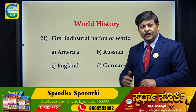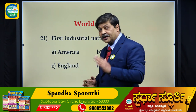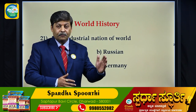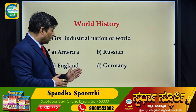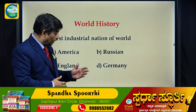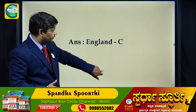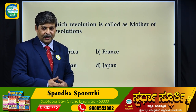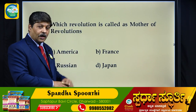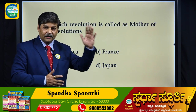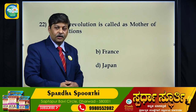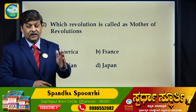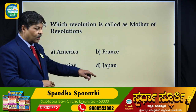Now the world history part. Which is the first industrial nation where the industrial revolution took place? England is called the mother of industrial revolution and the first industrial nation of the world. Which revolution is called the mother of revolutions? The American Revolution of 1776 is called the mother of revolutions, as it became a model to other revolutions.